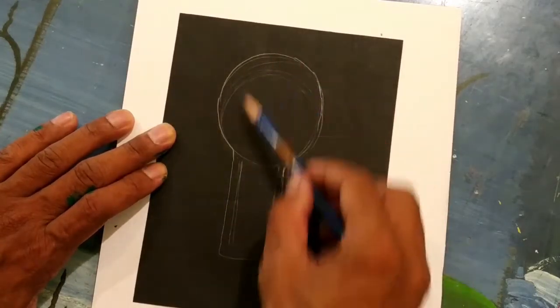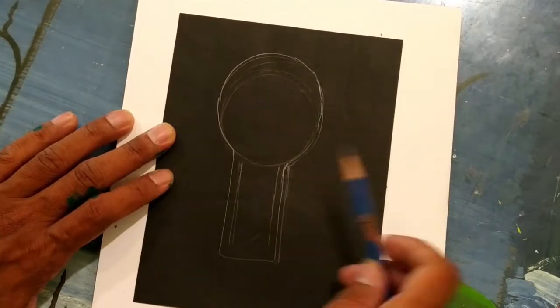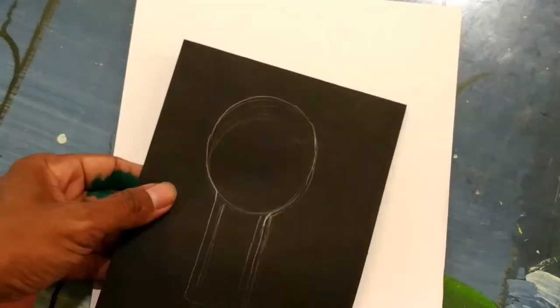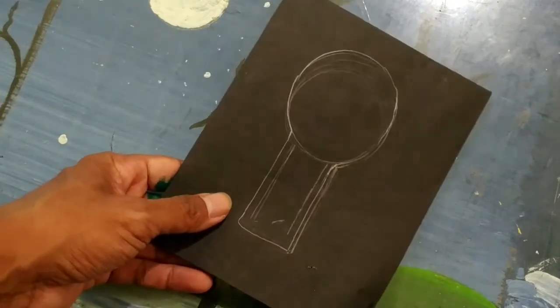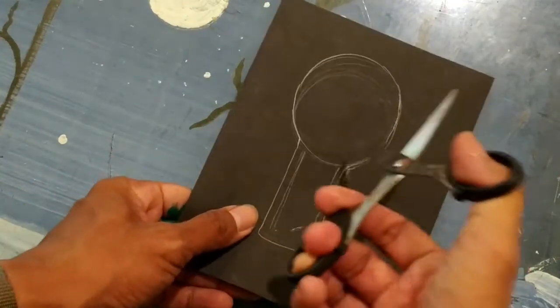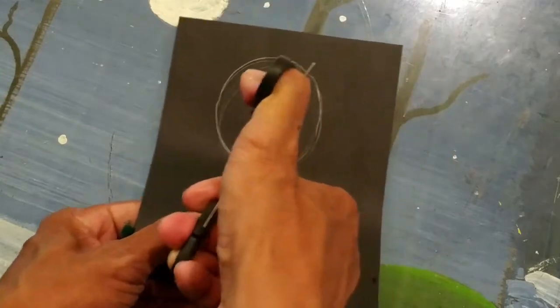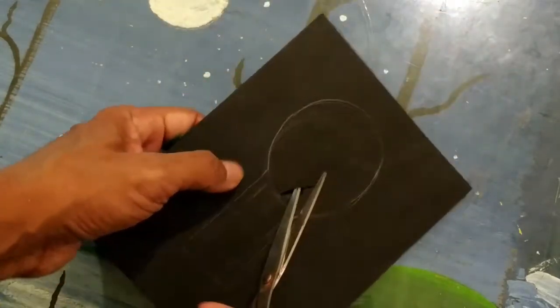Draw the keyhole on the black paper and you'll cut it. Now cut it, this is the way how I cut. First you create the hole and then start.